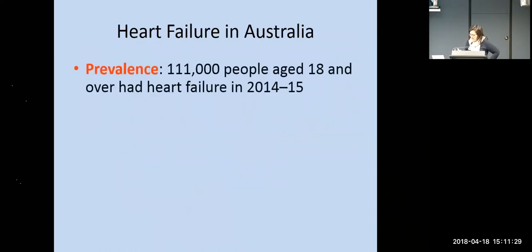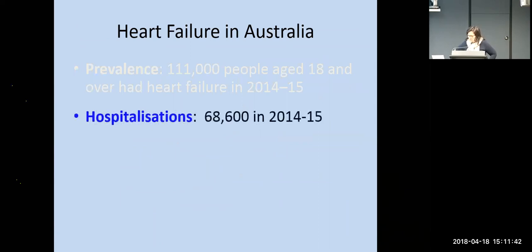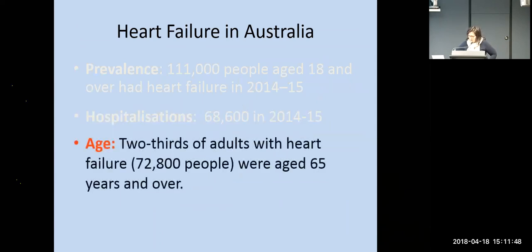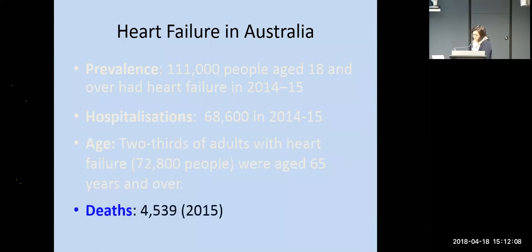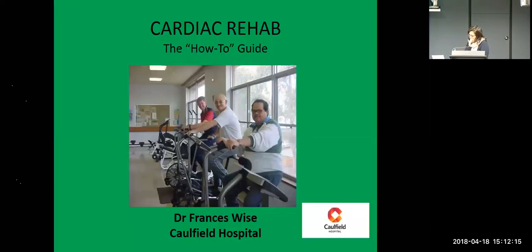Looking at a few stats on heart failure: in adults in Australia, the prevalence is a bit over 100,000 people. In a year, about 68,000–69,000 people are hospitalised with heart failure. It's the number one reason for people to be admitted to hospital in the over-65s. Two-thirds of adults with heart failure are aged over 65. In terms of how many deaths it's causing per year, it's about four and a half thousand.